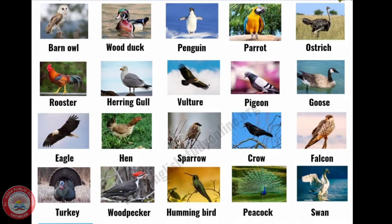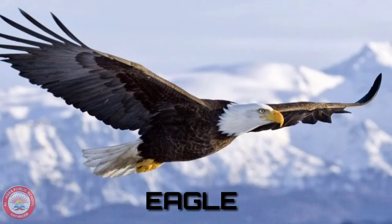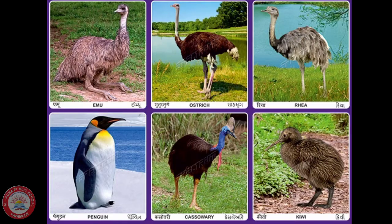There are different types of birds. Some birds are very small and some are very big. Some birds can fly very high. Some birds cannot fly. Now we are going to see some birds that cannot fly.